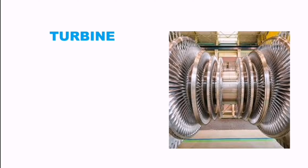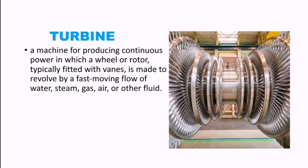What exactly is meant by a turbine? Looking at this figure, a turbine is a machine for producing continuous power in which a wheel or rotor, typically fitted with vanes, is made to revolve by a fast-moving flow of water, steam, gas, air, or other fluid. That fast-moving fluid causes the vanes or blades to rotate — that is what we call a turbine.